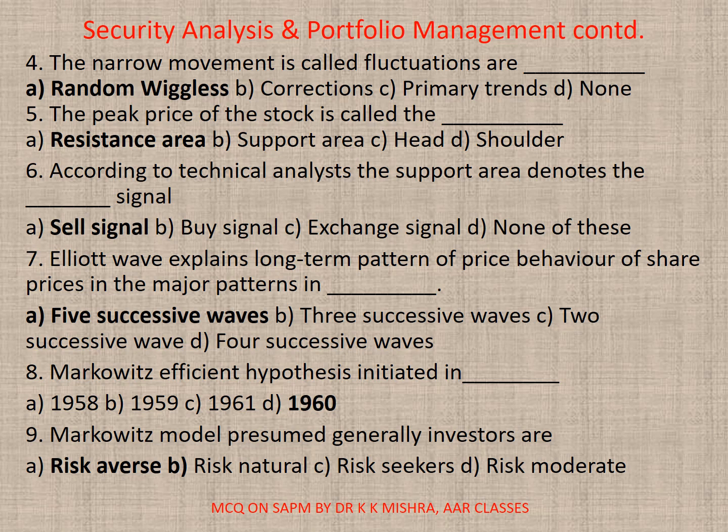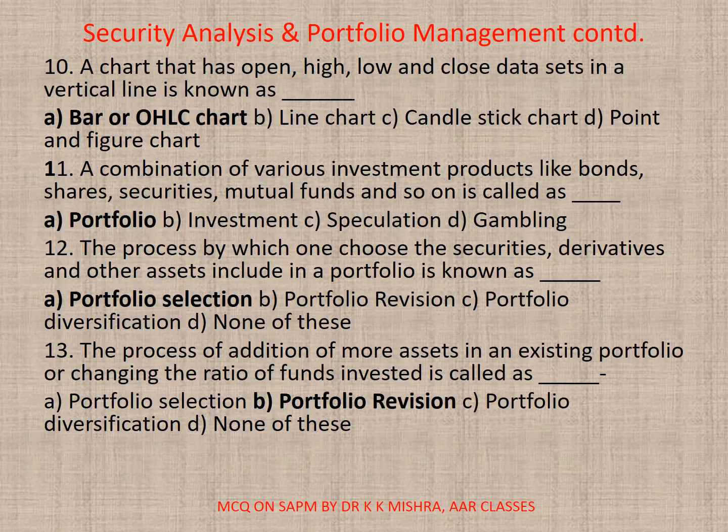Question 9: Markowitz's model presumed that generally investors are risk-averse — correct option is A. Question 10: A chart that has open, high, low, and close data sets represented in a vertical line is known as — correct option is A — a bar or OHLC chart.